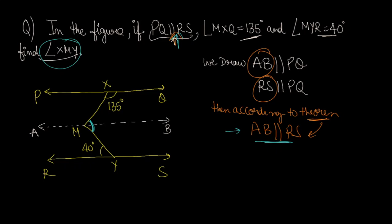Now, PQ and AB are two parallel lines. The interior angles on the same side of a transversal sum to 180 degrees. So the sum of these two co-interior angles is 180 degrees. If angle QXM is 135 degrees, then angle XMB will be 45 degrees.